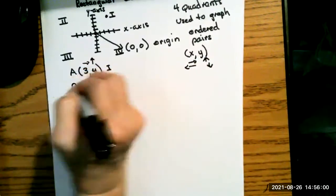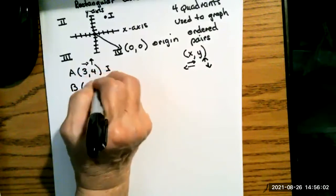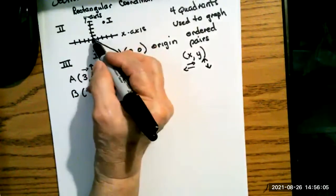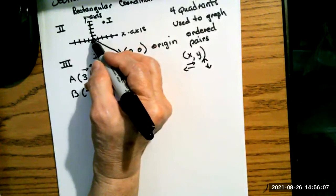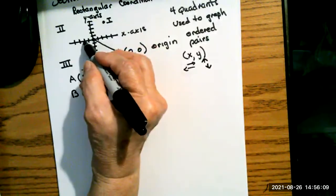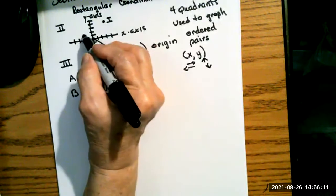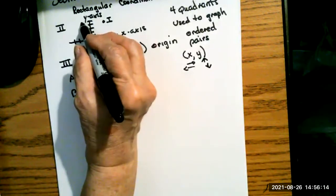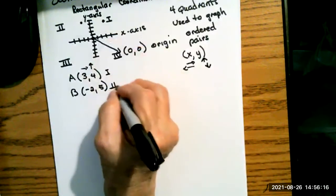Let's look at b. b is negative two, five. So if I start at the origin and I go two to the negative side, would be negative two. And up five, one, two, three, four, five, would put me in quadrant two.